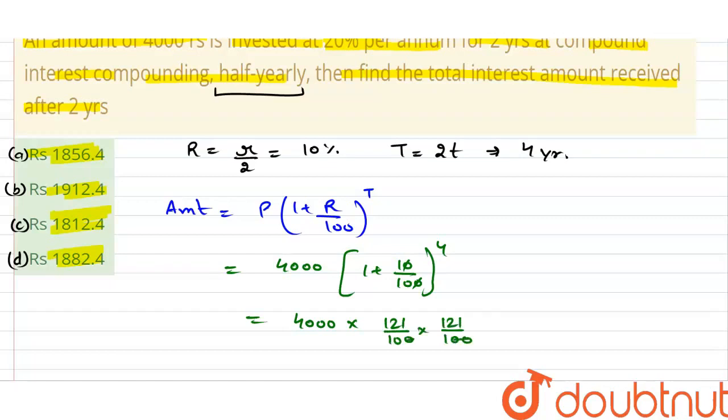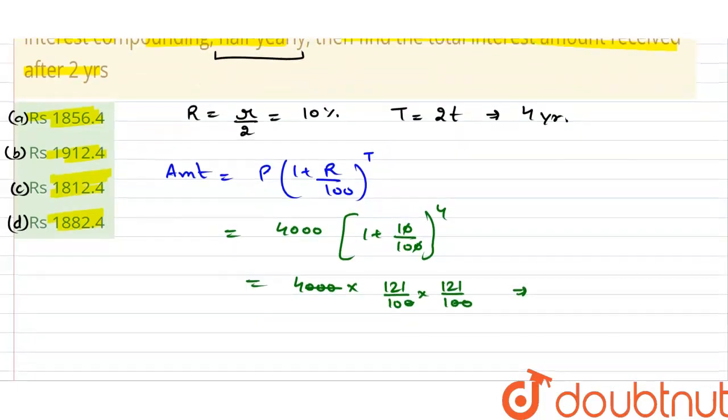100 से यहाँ पर 100 cancel कर दी, अब 121 का whole square into 4 करेंगे, तो यह value कितनी हो जाएगी, यह value हो जाएगी हमारे पास 5,856.4 rupees, ठीक है.